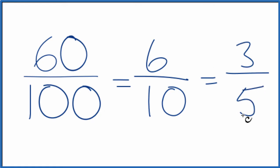We can't reduce this any further. So these are equivalent fractions. If you divide 60 by 100, 6 by 10, or 3 by 5, you'll get 0.6. It's just that we've reduced 60 over 100 to lowest terms.